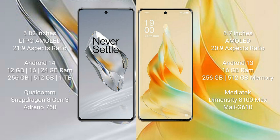OnePlus 12 comes with 12GB, 16GB, or 24GB RAM and 256GB, 512GB, or 1TB internal storage, powered by the Qualcomm Snapdragon 8 Gen 3 processor and Adreno 750 GPU. OPPO Reno 9 Pro comes with 16GB RAM and 256GB or 512GB internal storage, powered by the MediaTek Dimensity 8100 Max processor and Mali-G610 GPU.